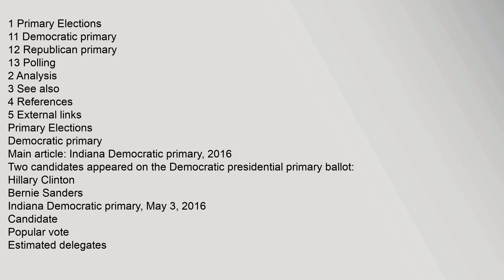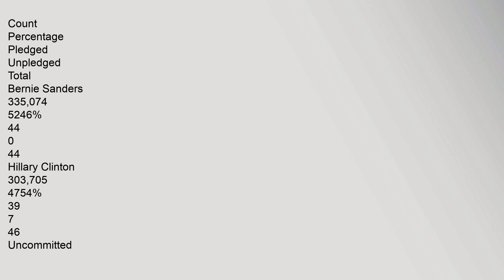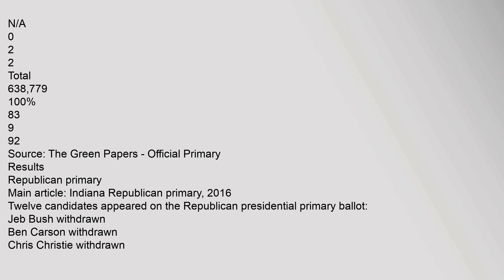Primary elections — Democratic primary. Two candidates appeared on the Democratic presidential primary ballot: Hillary Clinton and Bernie Sanders. Indiana Democratic primary, May 3, 2016. Bernie Sanders received 335,074 votes (52.46%), winning 44 pledged delegates. Hillary Clinton received 303,705 votes (47.54%), winning 39 pledged delegates and 7 unpledged delegates for a total of 46. Total votes cast: 638,779 (100%), with 83 total delegates.